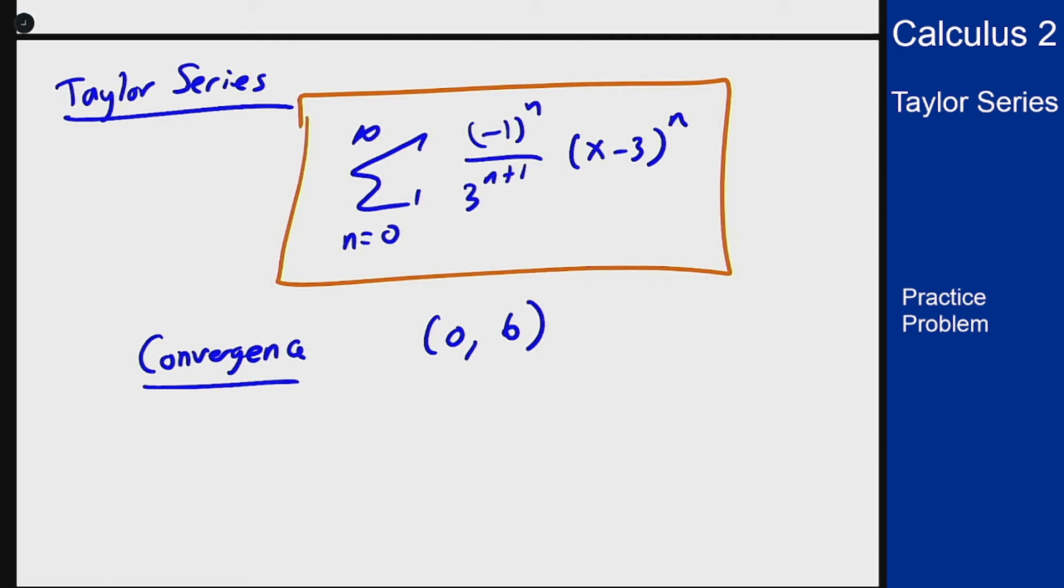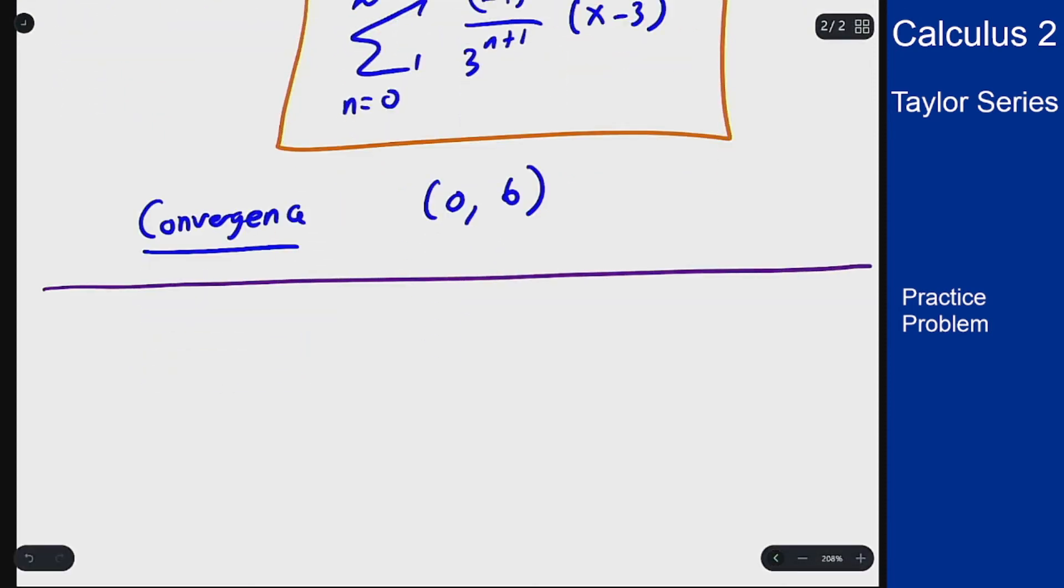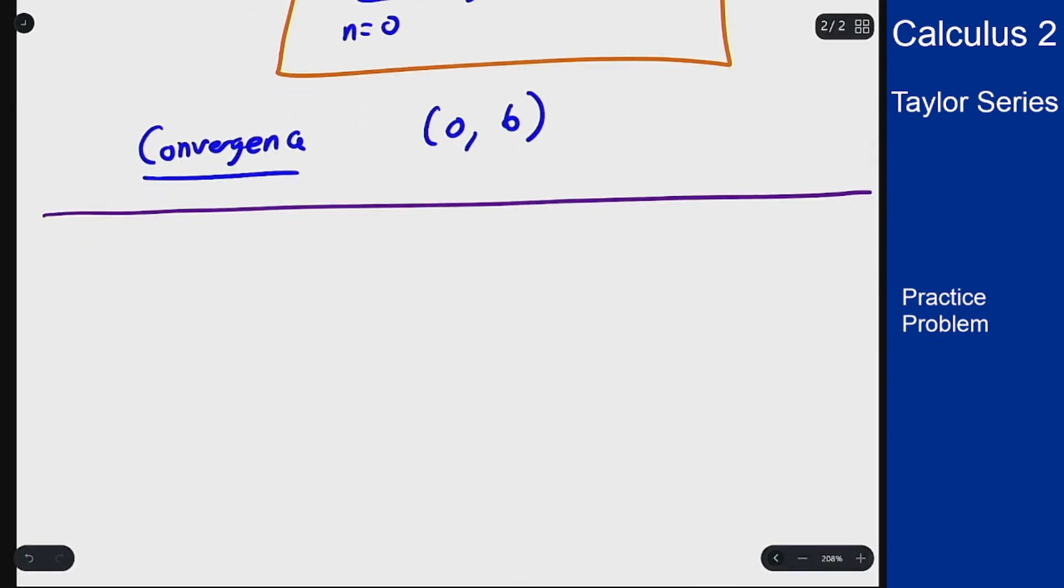For this problem though there is a different approach that will also work and that involves a more tricky manipulation of the function that we have. So I want to get a power series that is centered around 3. So I want to write 1 over x as a series in terms of powers of x minus 3.